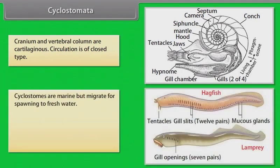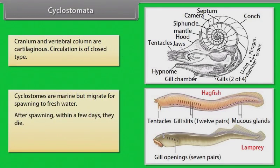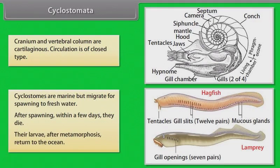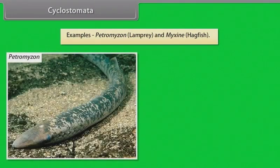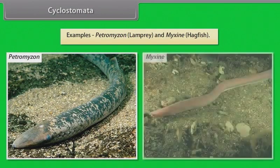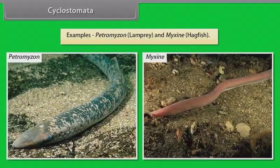Cyclostomes are marine but migrate for spawning to fresh water. After spawning, within a few days, they die. Their larvae, after metamorphosis, return to the ocean. Examples: Petromyzon (Lamprey) and Myxine (Hagfish).